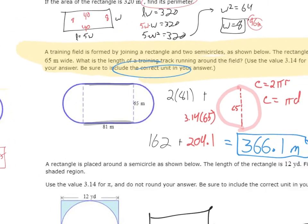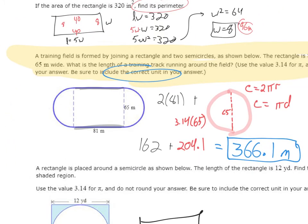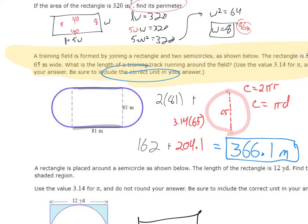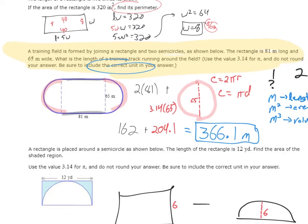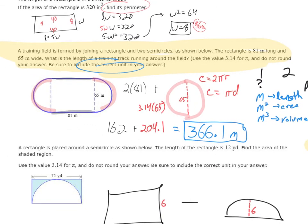Alright, this next one we talked about together in class. Here we have a training field is formed by joining this rectangular part to two semicircles. And we also discussed in class that when you join these two semicircles together, you create a full circle. They give us the dimensions of the rectangle, and then they ask us to figure out what is the length around the track. So if I were to run around this track, how far am I running? Essentially, we're finding the perimeter of the shape. So I've got two straightaway sections. Those are each 81 meters in length.